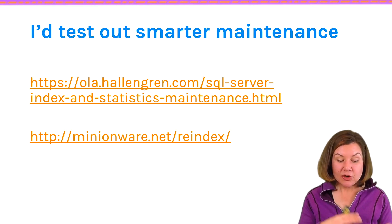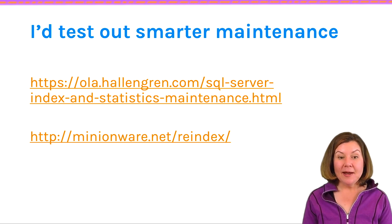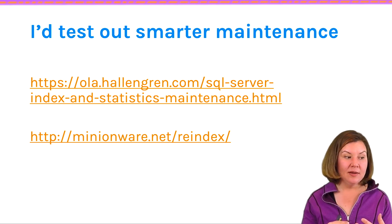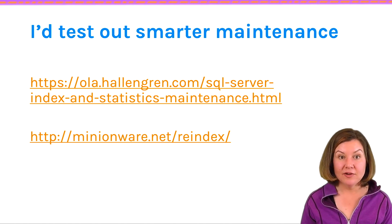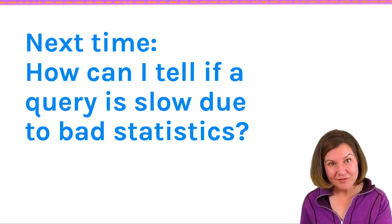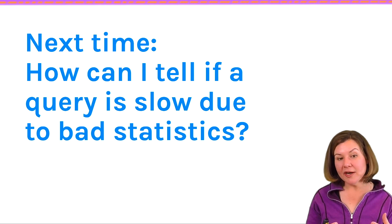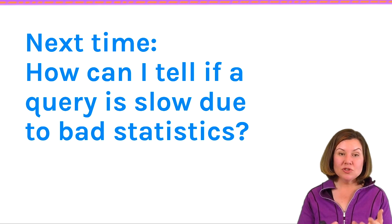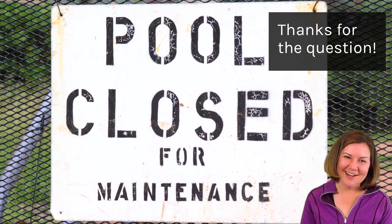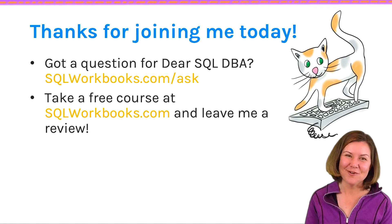After rolling that back and getting some breathing room, what I would do is test out a smarter maintenance solution. Ola Hallengren has a free maintenance solution. Minionware at Minionware.net has a re-index maintenance solution. You want to test these out in a test environment because they're very configurable and you want to find the settings that are right for you — but you don't have to write all this code yourself. This is a big question and we're going to tackle part two in another episode. Part two will cover: if I'm looking at a slow query, how can I tell if it's slow due to bad statistics or some other reason? Thanks so much for this question about index maintenance — I'm enjoying it so much that we're doing two episodes on it.